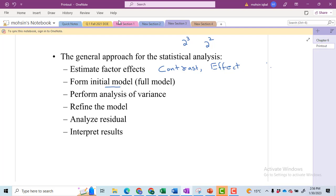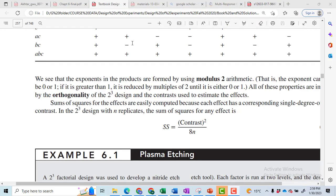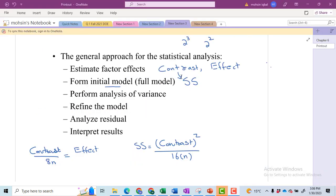After finding the contrast and effect, we will then form the initial model. Initial model consists of sum of squares. This sum of squares values will be found using the answers or the result from the contrast. Again, the formulas have been shown. Let me show the formula in the book as well. This is the general formula for the contrast. So sum of squares is equal to contrast whole square divided by 8 and this 8 is used for 2 raised to power 3 factorial design. The formula for the effect is contrast divided by 8n where 8 is the number of terms with the positive sign and the number of terms with the negative sign. n is the number of replications.